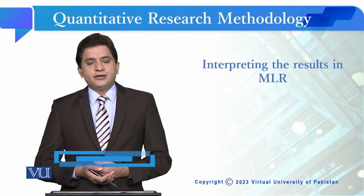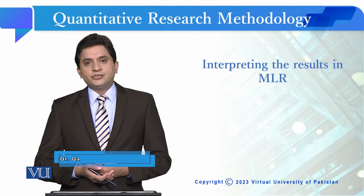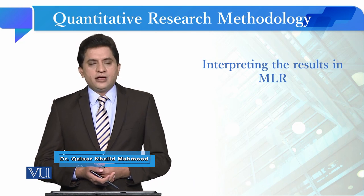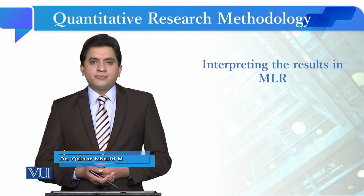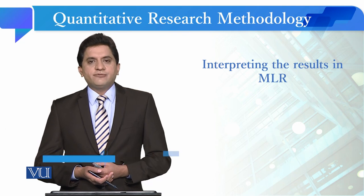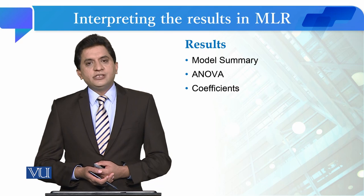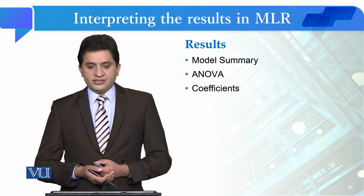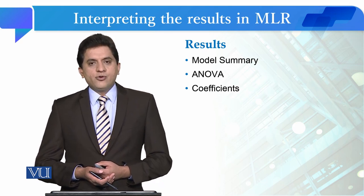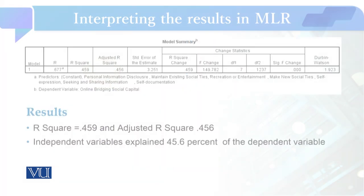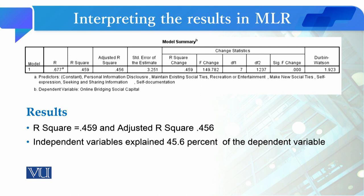Students, after checking the assumptions required to be fulfilled for the MLR, now we are going to interpret the results that we got from our analysis. In the results, we are going to see three things: model summary, ANOVA table, and coefficients of the independent variables. The first thing we are going to see is the model summary of the MLR.